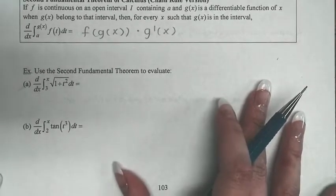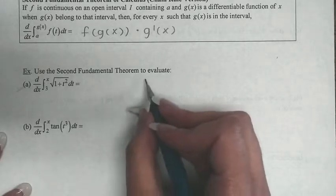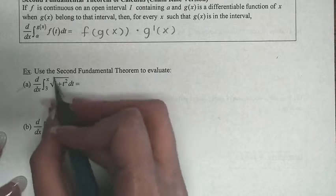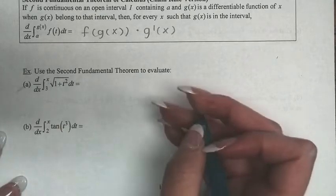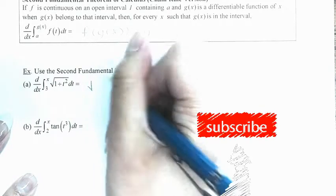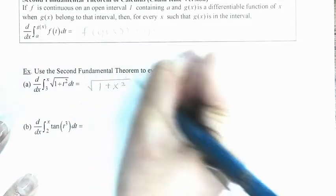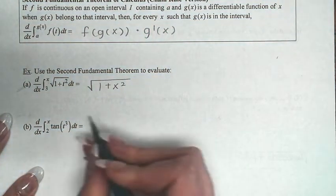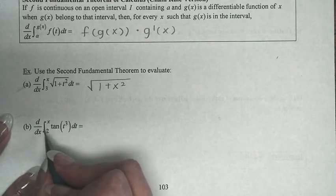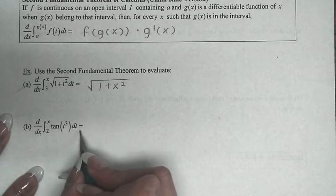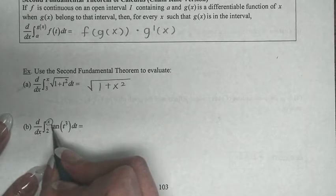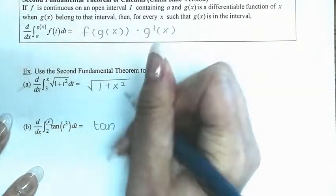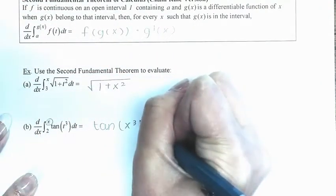Let's look at more examples. For part (a), the derivative with respect to x of the integral from some lower bound to x of √(1 + t²) dt: here x is alone, so no chain rule is needed, giving √(1 + x²). For part (b), the derivative with respect to x of the integral from 2 to x of tan(t³) dt: x is again alone, so the answer is simply tan(x³).